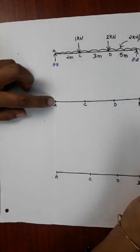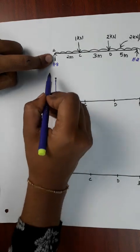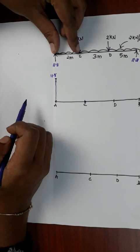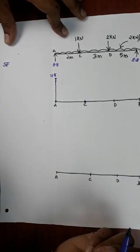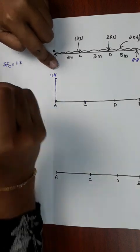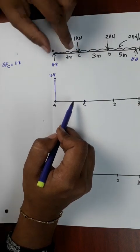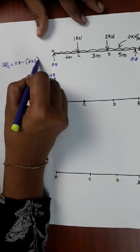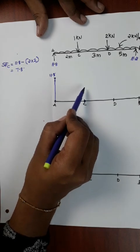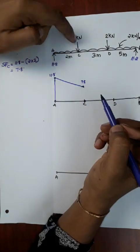Now we draw the shear force and bending moment diagram. The shear force at A equals the total reaction at A, which is 11.8 kN. Moving to point C, there is UDL — uniformly distributed load of 2 kN/m over a 2m distance. So the shear force at C is 11.8 minus 4 equals 7.8 kN. After the 1 kN point load at C, the shear force becomes 7.8 minus 1 equals 6.8 kN.